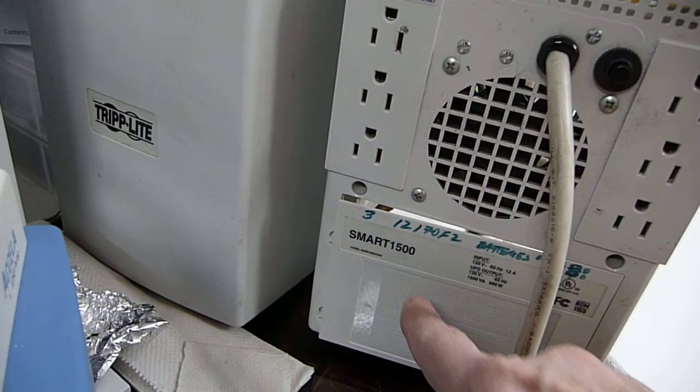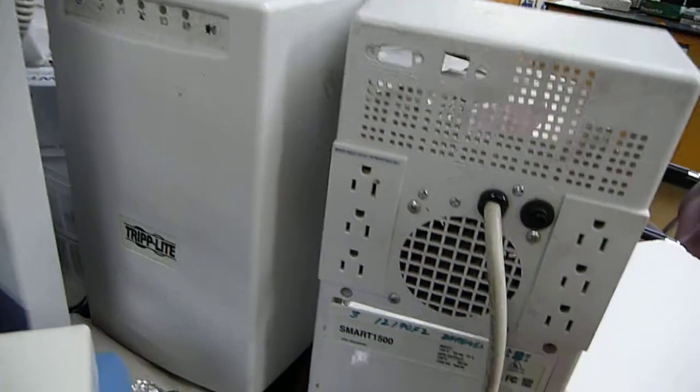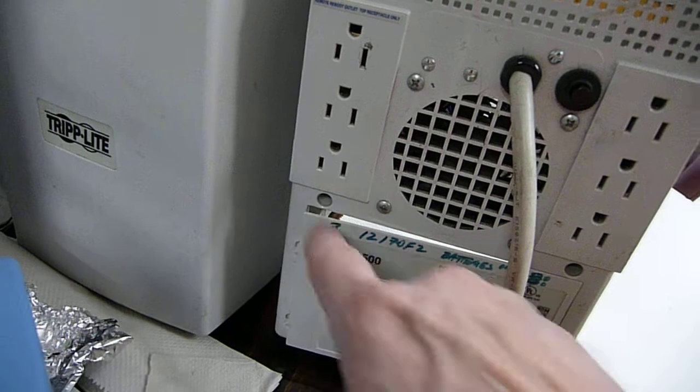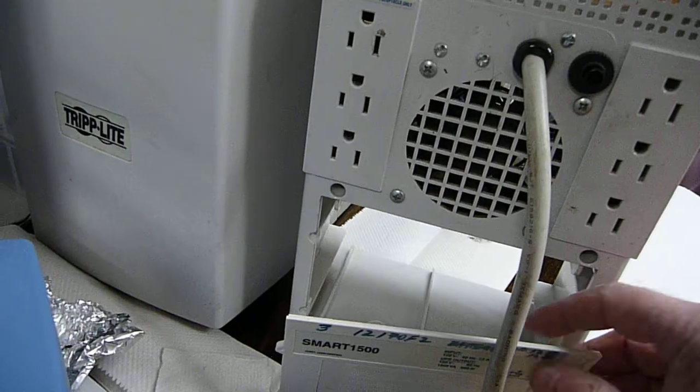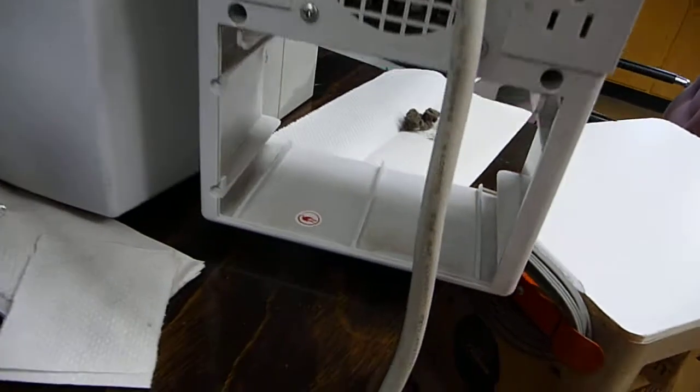This is a Triplite Smart 1500 UPS, which I've opened up by undoing a screw here, a screw here, and the back panel. This is where the battery compartment door is, and screw here, and screw here.